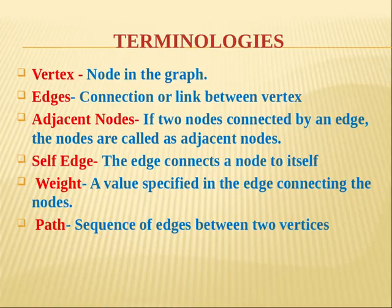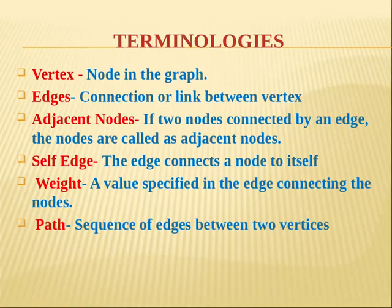Adjacent nodes: when two nodes are connected by an edge, those two nodes are called adjacent nodes. Self-edge: an edge connecting to the same node is called a self-edge. Weight: the edge between nodes has some value, and that value is named weight. Path: the sequence of edges between two vertices — for example, the in-between vertices you travel through from Koyembedu to Annanagar is called the path.